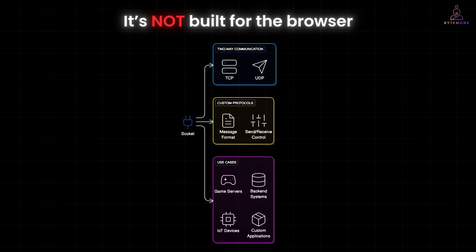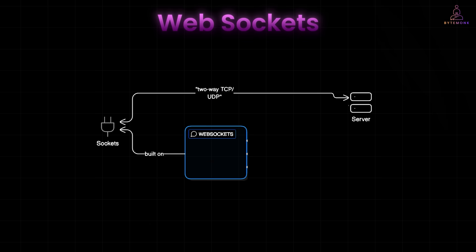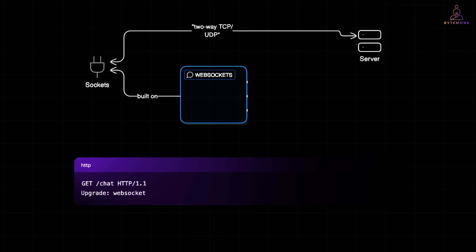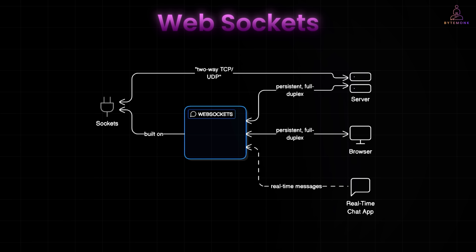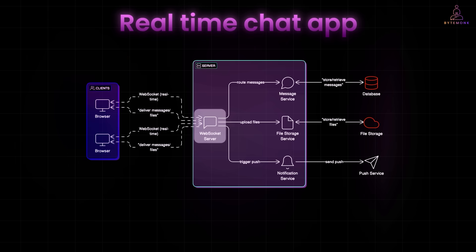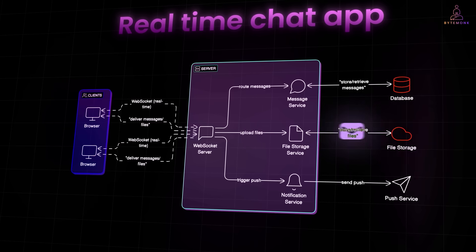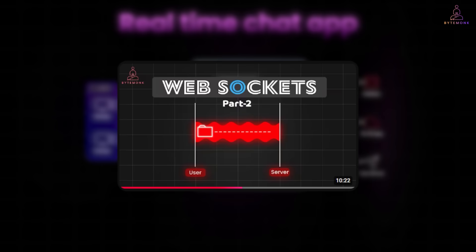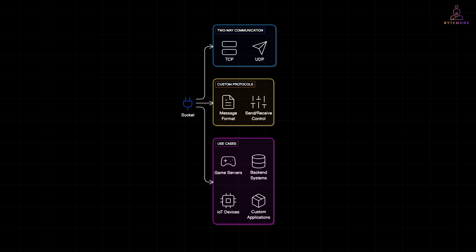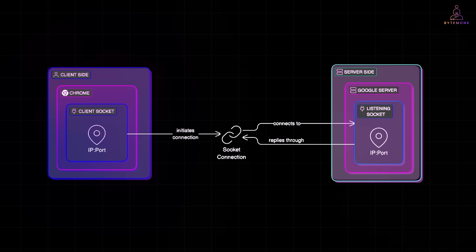But here is the catch: raw sockets are not built for the browser, and that is where WebSockets come in. They sit on top of regular TCP sockets, but they are browser-friendly. A WebSocket connection starts just like an ordinary HTTP request, but then it upgrades to a persistent full-duplex connection, meaning both the browser and the server can send messages at any time — no polling, no waiting, no repeated requests. For example, if you are building a real-time chat app in the browser, you could use WebSockets to keep the connection open between client and server, so when one user sends a message, it appears instantly on the other side — no need to refresh, no delay. This is what powers modern apps like Slack, WhatsApp Web, live dashboards, and stock tickers. From raw TCP connections to modern WebSockets powering your favorite apps, whether you're building a multiplayer game server, streaming real-time data, or wiring up a simple chat between two machines, it all starts with one thing: a socket.